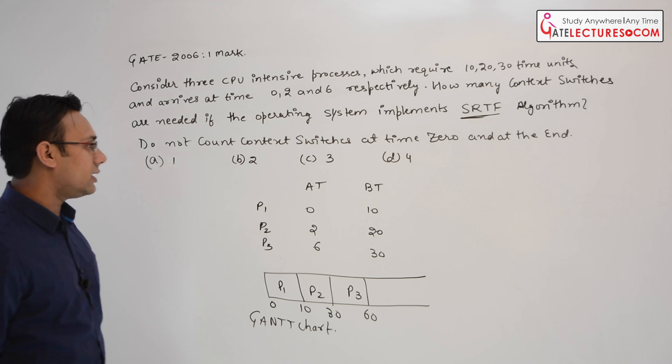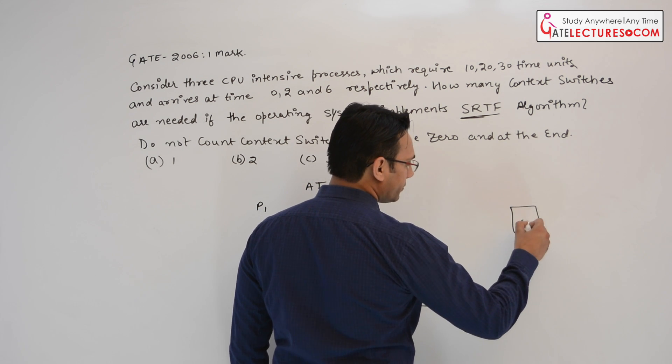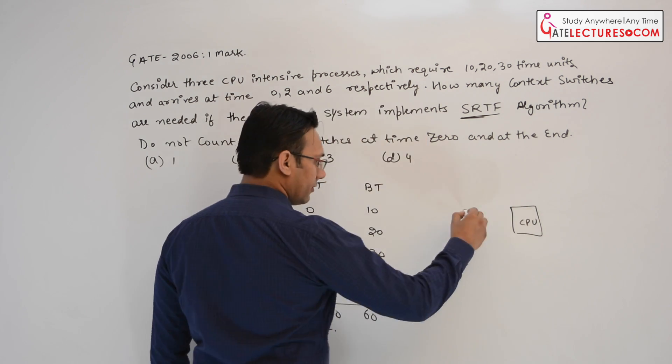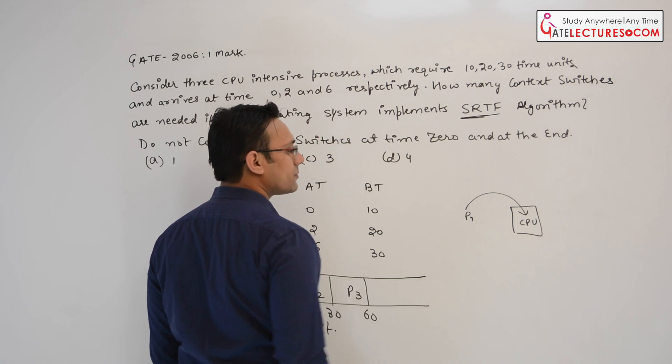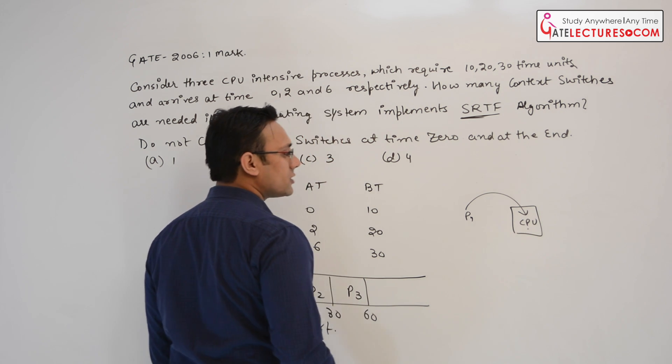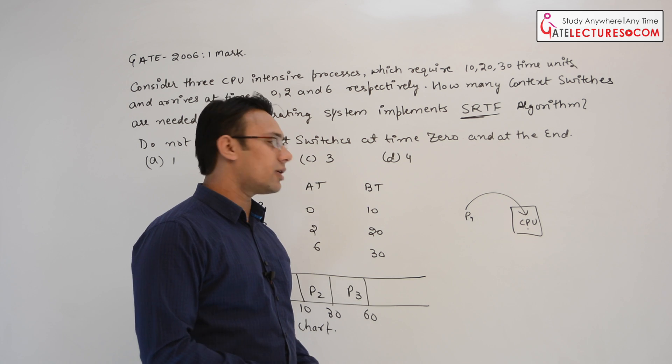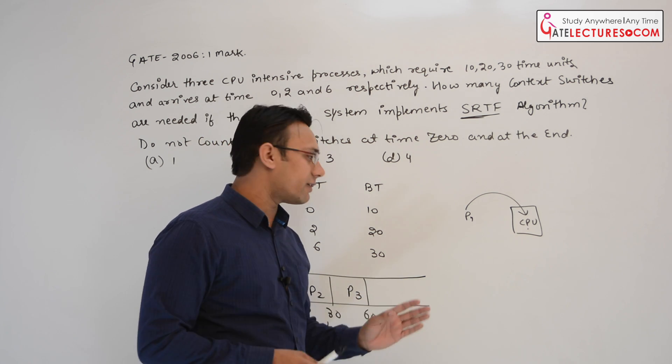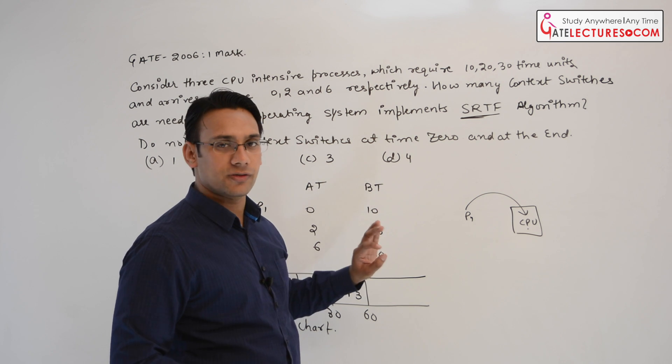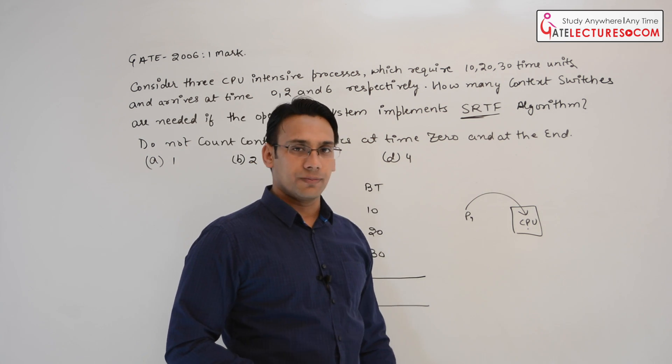So what is the context switch? Let me just summarize it again. If this is the CPU and we take one process inside the CPU, assume this is a process P1. Now, after the completion of process P1 maybe due to preemption or maybe it is because the process P1 has completed. Let me repeat again. If let us suppose we have the process P1, the process P1 is executing in the CPU.